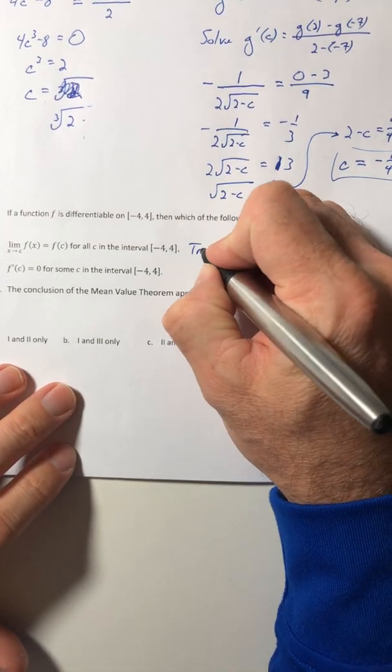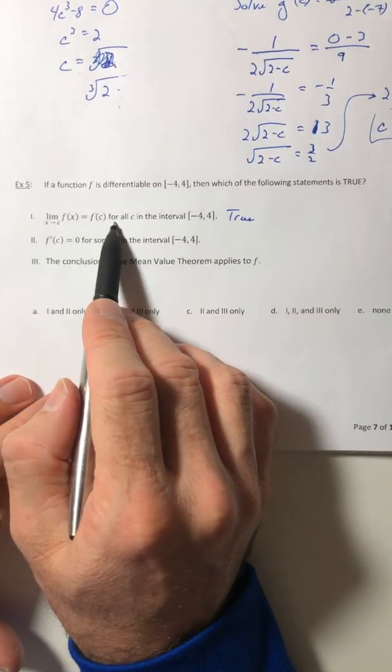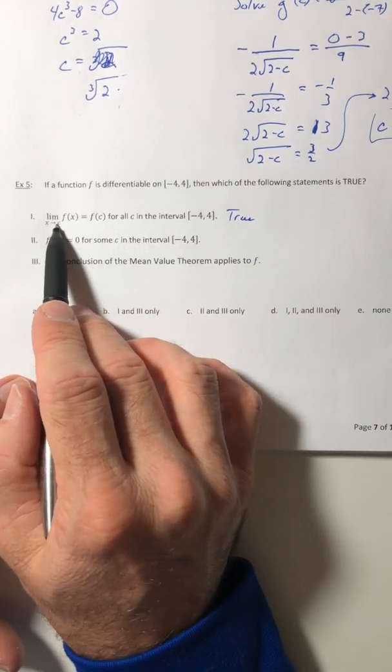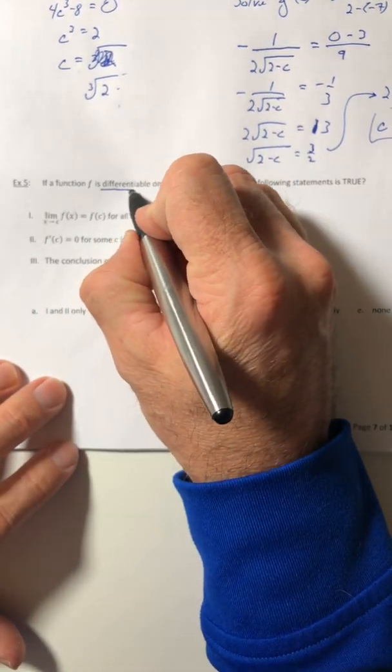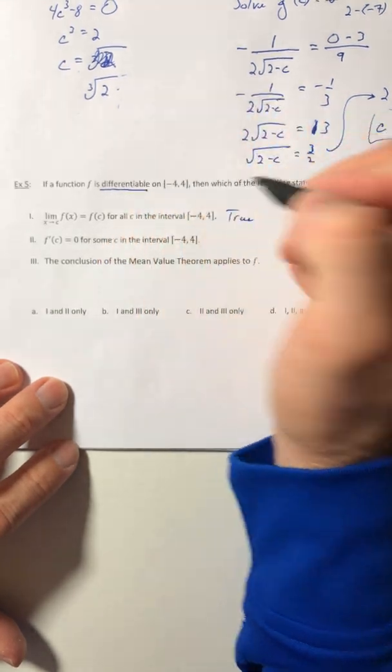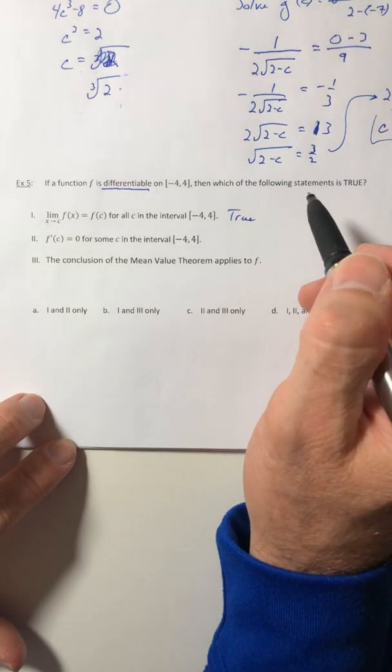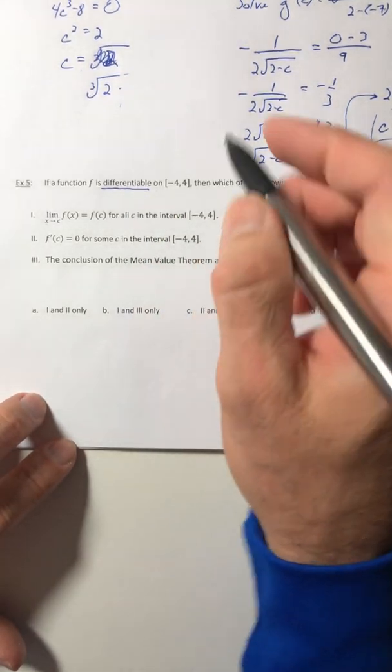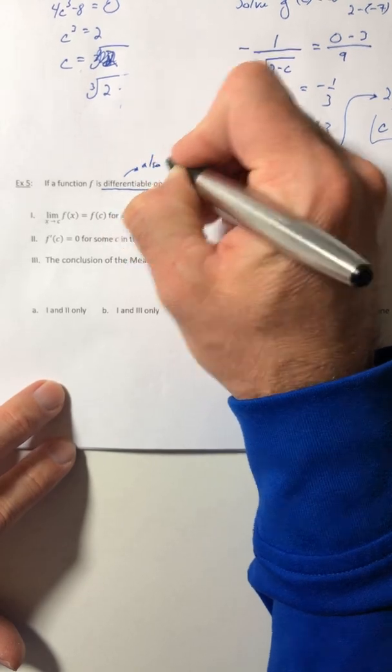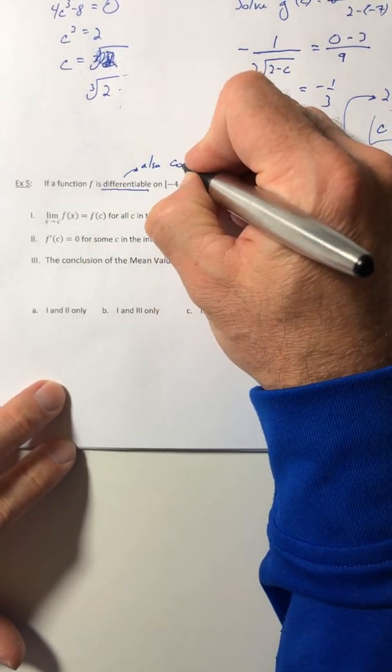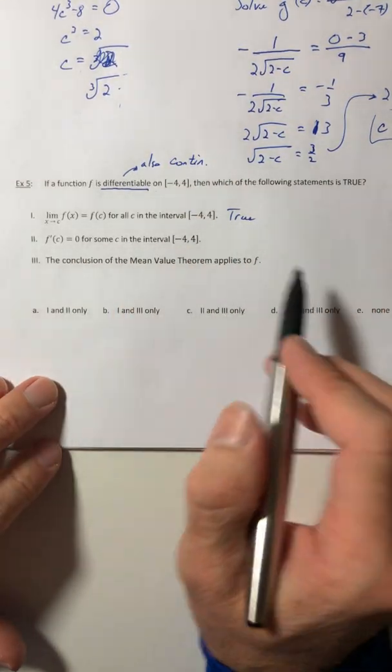Okay, so one, the limit of f of x as x approaches c equals f of c for all c in the interval. Well, that's going to be true. Because this right here, that's one of the criteria for continuity. And they didn't tell you directly that it was continuous, but you know that if it's differentiable, that means it's also continuous. Differentiability implies continuity. Not the other way around. But if it's differentiable on that interval, it's also continuous. Which means this is going to be true.